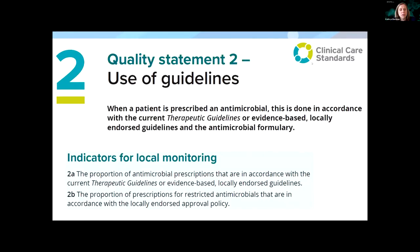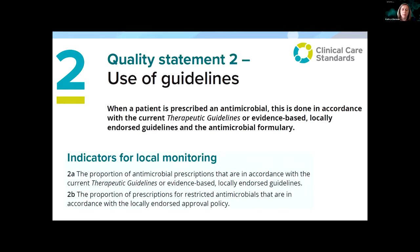Quality statement two looks at the use of guidelines. It's largely unchanged from the previous version, except that across the clinical care standard everything has generally been changed from antibiotics to antimicrobials. Compliance with guidelines in the Australian hospital setting sits around two-thirds of all prescriptions. The purpose is to facilitate appropriate prescribing including the spectrum, active ingredients, dose exposure, frequency, route of administration, and duration of therapy. Indicator 2B is new and measures restricted antimicrobials that are concordant with the approval policies.